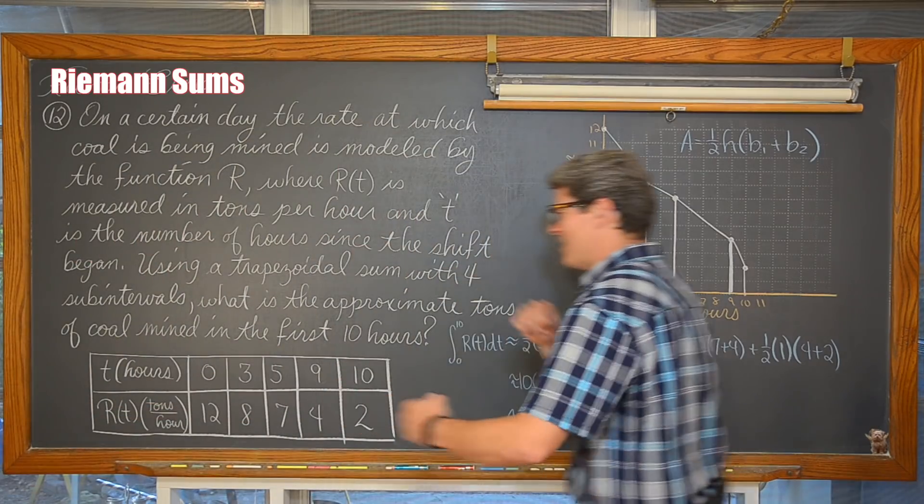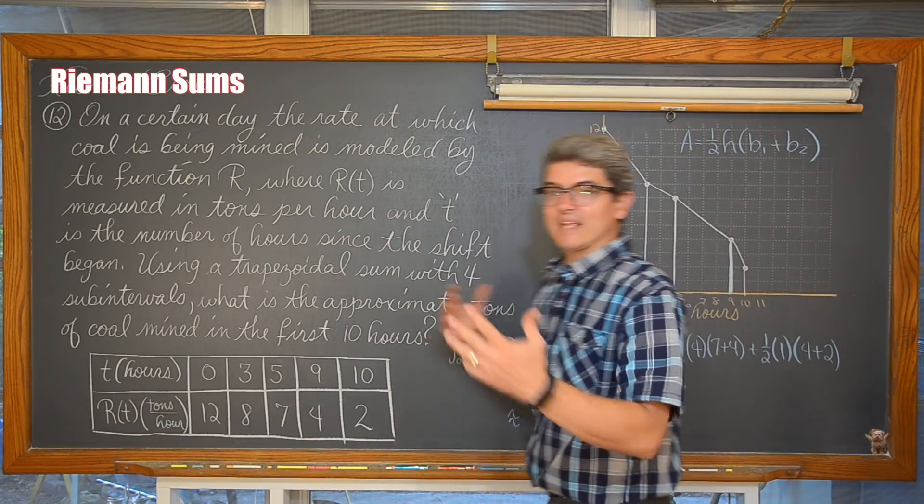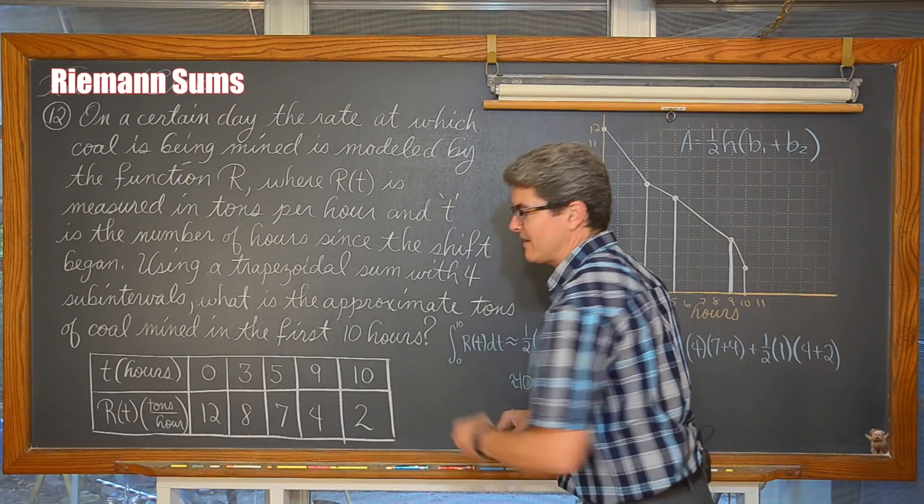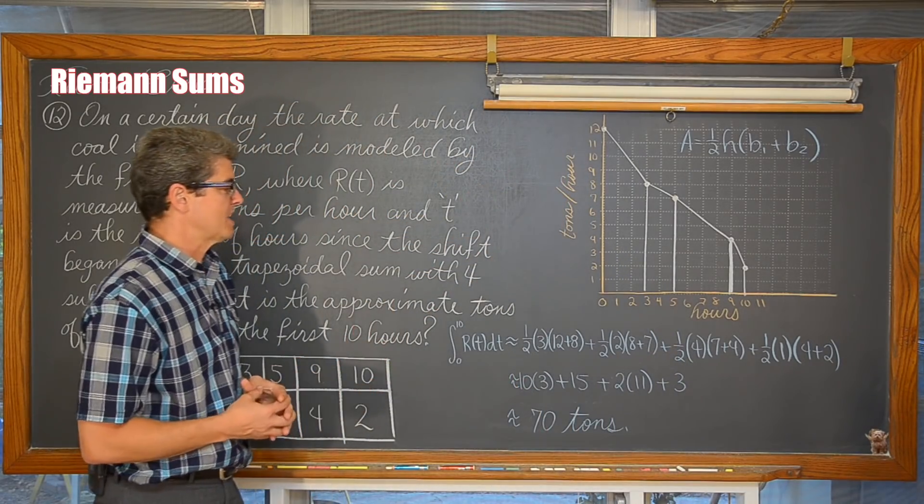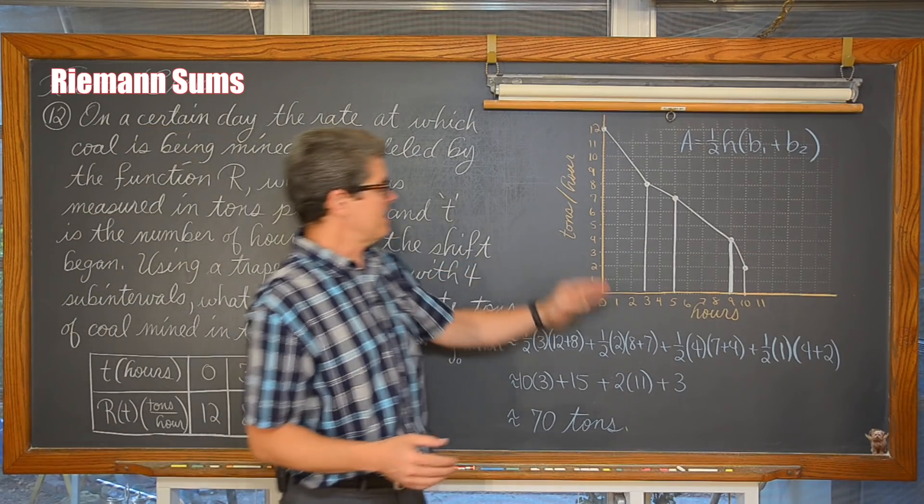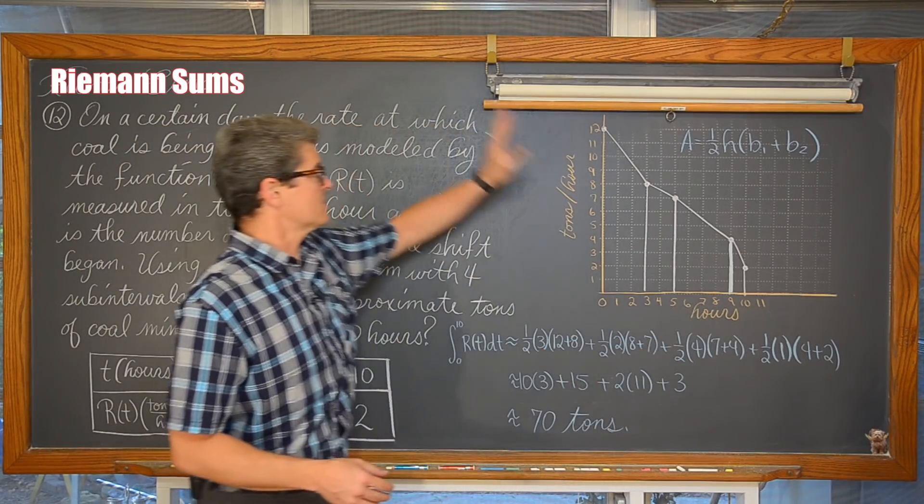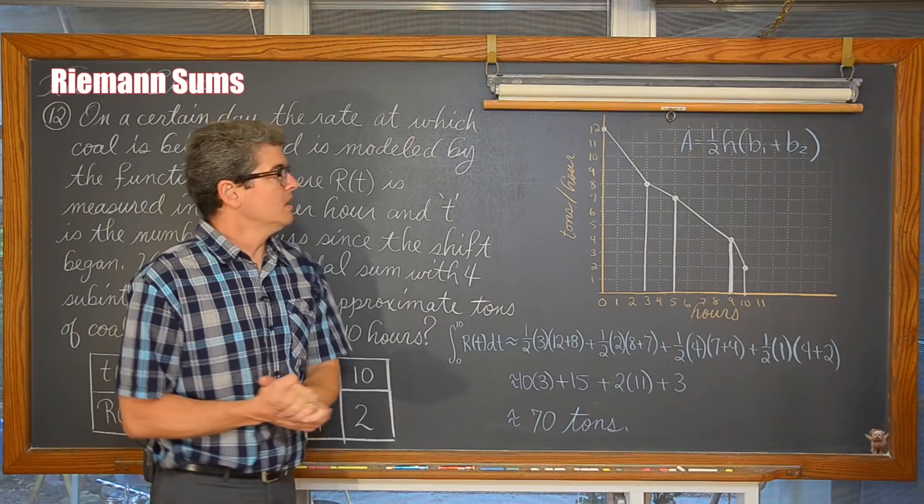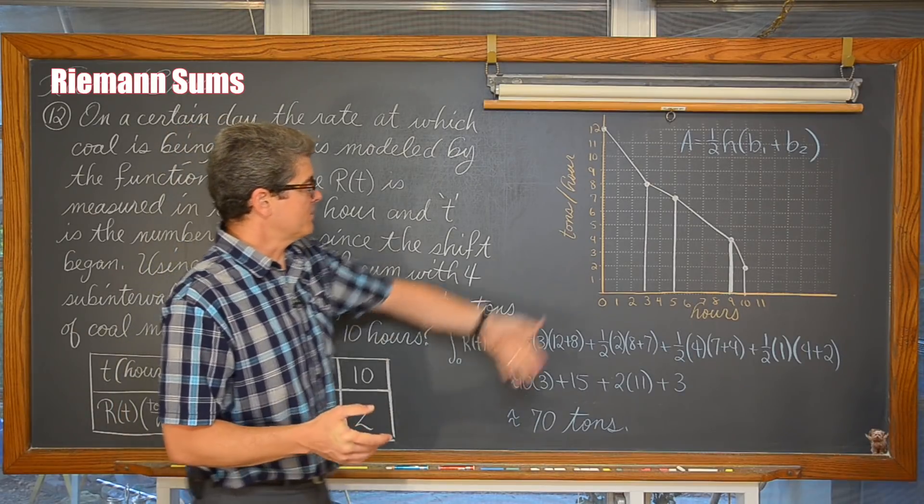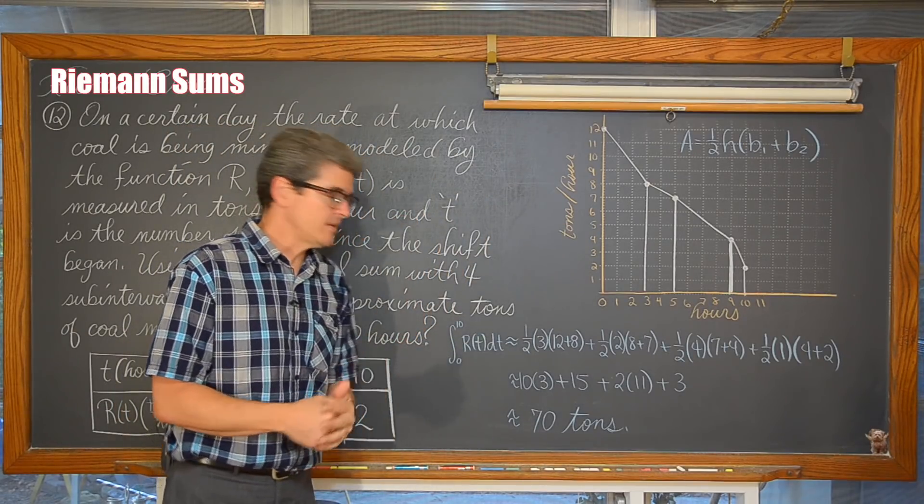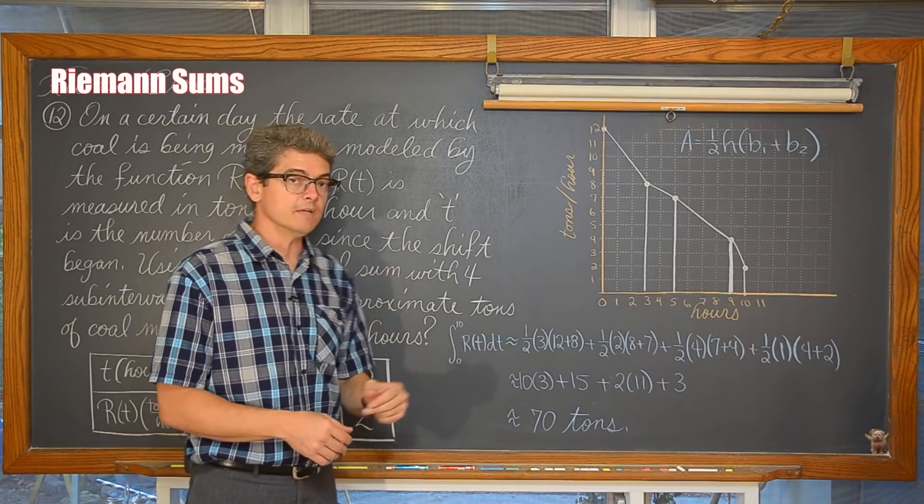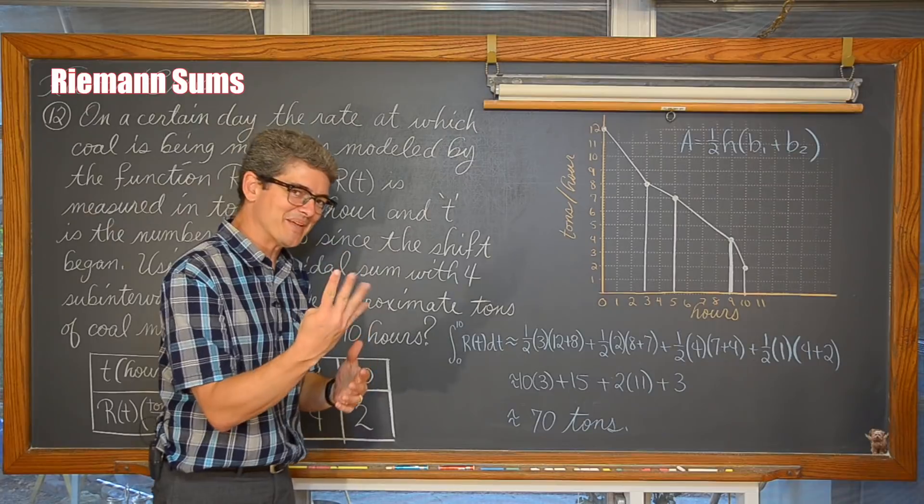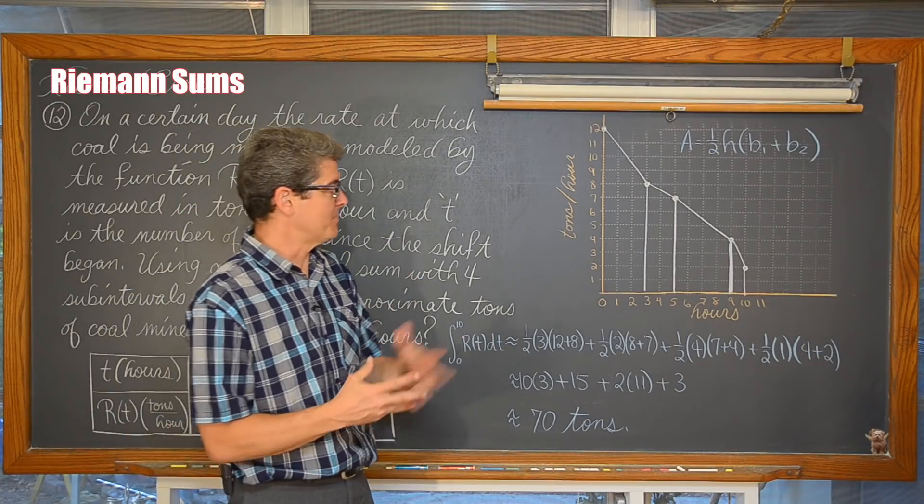So I got the door and I gave a solution. Now you don't necessarily have to do this, but I have taken our data out of the table and displayed it on a graph just to make sure you understand what we are doing here. We have got our time along the x-axis, our tons per hour from function R on the y-axis, and we are estimating the integral between 0 and 10 of R of T dt with four sub-intervals using our trapezoidal sum.